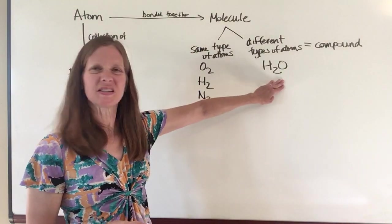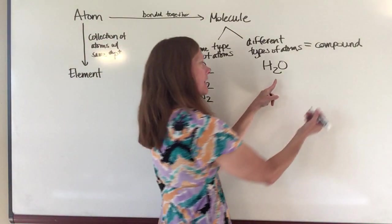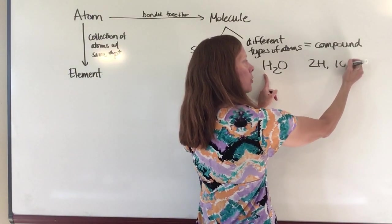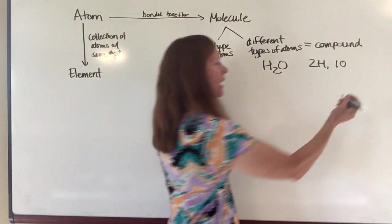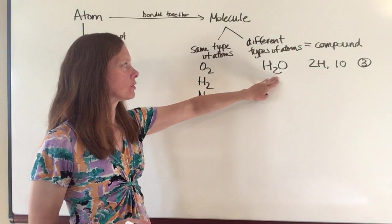So what does H2O mean? Well, what that means is that I have two hydrogen atoms and I have one oxygen atom. And so all together, I'm going to have three atoms in this particular molecule.